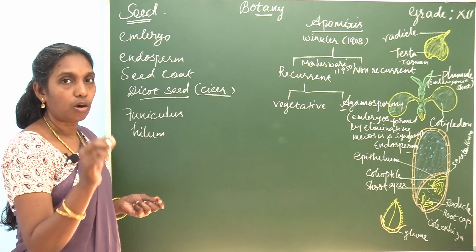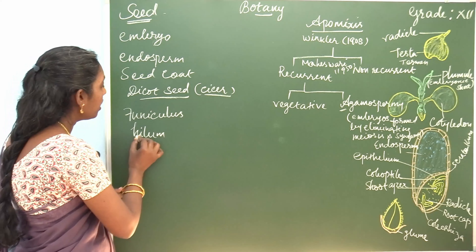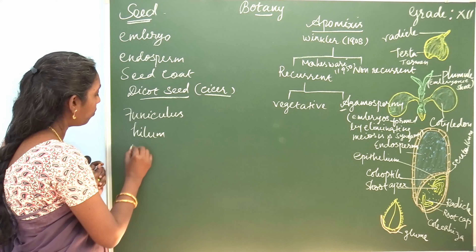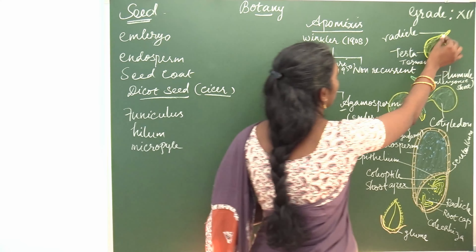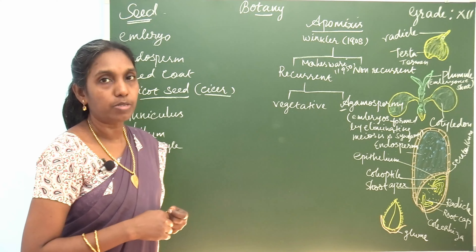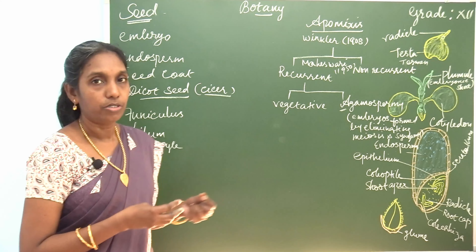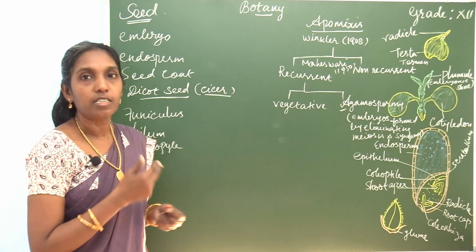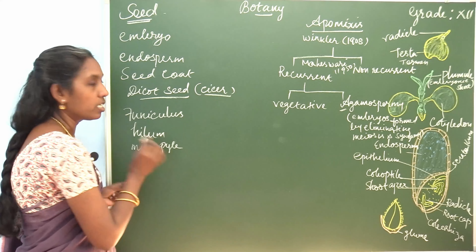Funiculus is the stalk of the seed which is attached to the fruit wall. When this stalk disappears, it leaves a scar known as hilum. Below this hilum there is a pore called micropyle. This micropyle facilitates gaseous exchange like oxygen, and at the time of seed germination it absorbs water.